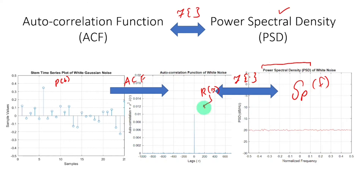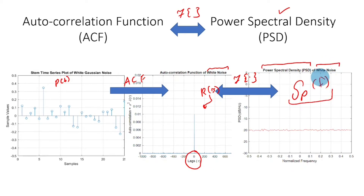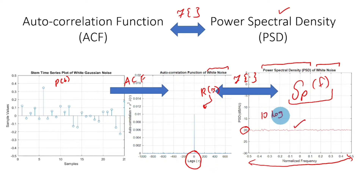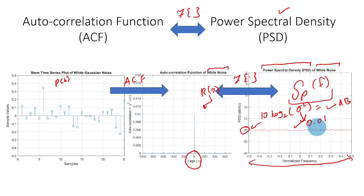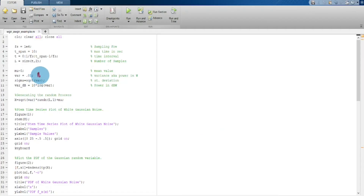For white noise, the autocorrelation function exists only for a time delay of zero and is zero elsewhere. In the context of white noise, the power is distributed equally among all frequencies — that power level is 10 log10 of the variance in dB scale, which is 20 dB in this case. The sigma in our experiment is set to 0.01, so the autocorrelation is 0.01 delta(t), as also shown in the code.